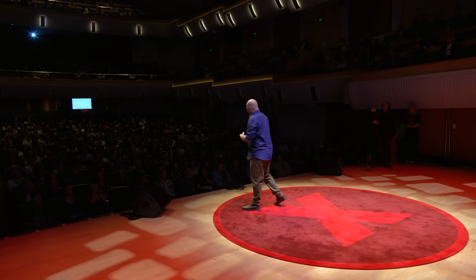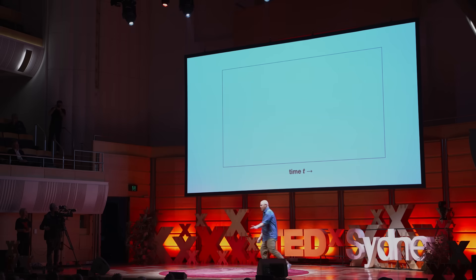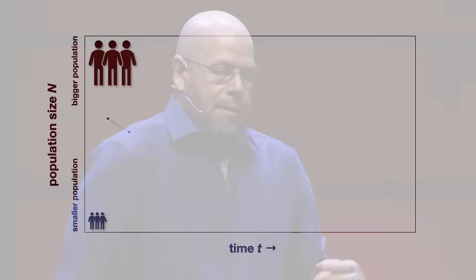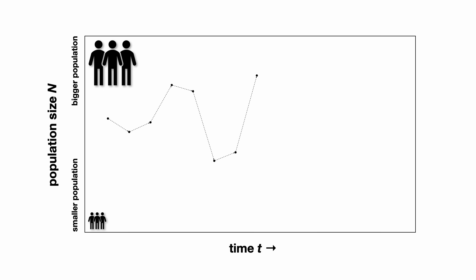To put this into context about what it means for the planet, I have to give you a bit of a primer on basic demography. Here's where the maths start. We have time along the x-axis going forward and population size on the y-axis. Let's say you do a census at some regular interval — in Australia, we do it every five years. For each interval, we can take the natural logarithm of the ratio of the population sizes between the two times. That value we call r — the rate of population change. In this case, it's declined, meaning population has gone down in this one interval.